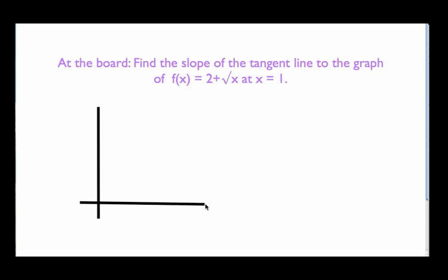We'll make that the y-axis and that the x-axis. The graph of this function looks something like this — it's the graph of square root of x shifted up by two units. What we're trying to do is go to x = 1 and draw the tangent line that touches the graph right at 1 and follows the general overall trajectory of the curve.